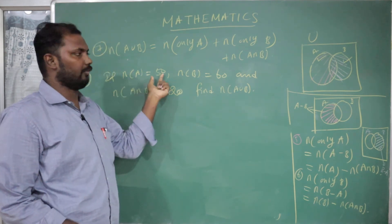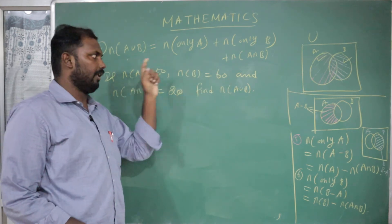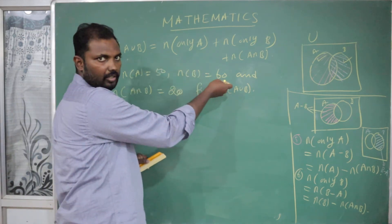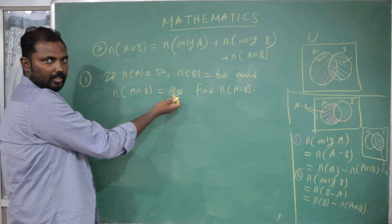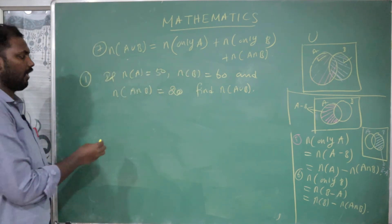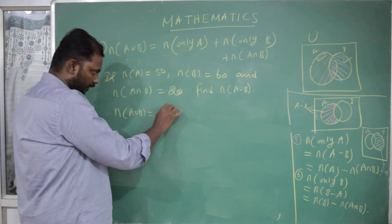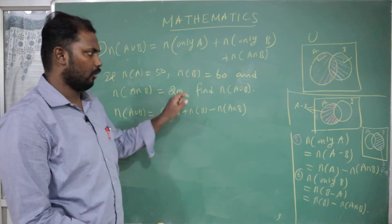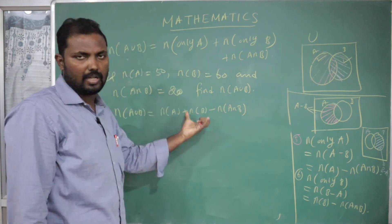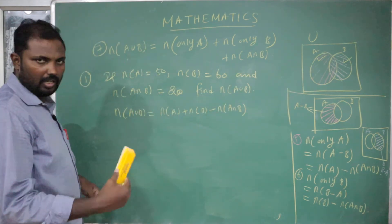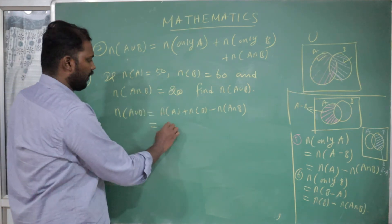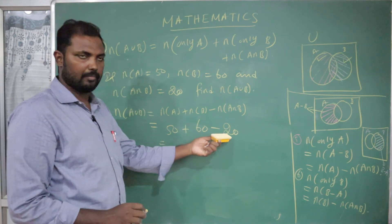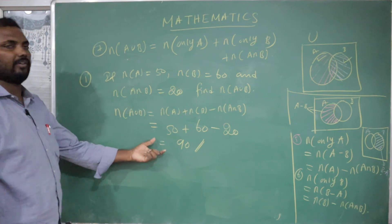Set A has 50 elements, set B has 60 elements, and A intersection B has 20 elements — these are repeated in both sets. So N of A union B equals N of A plus N of B minus N of A intersection B. Substituting: 50 plus 60 is 110, minus 20 equals 90. So N of A union B equals 90.